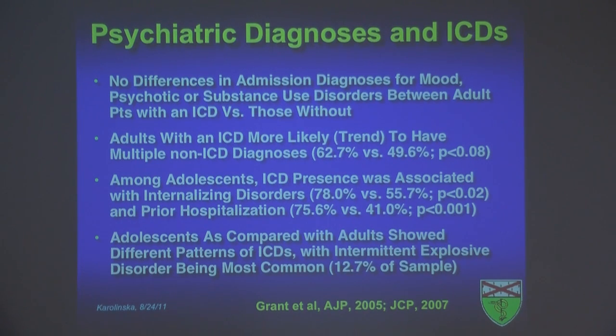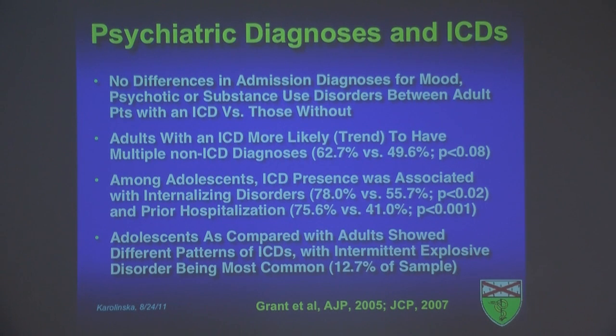This highlights the importance of assessing for co-occurring disorders. Among the adolescent sample, the presence of an impulse control disorder was associated with internalizing disorders like mood or anxiety disorders. There were high levels of externalizing disorders like substance use and conduct disorders in both groups. The most robust statistical finding was with prior hospitalization, where the group with impulse control disorders were more likely to have been hospitalized previously, suggesting either a more severely ill group, or that not targeting the impulse control disorder in treatment might lead to recurrent hospitalizations.